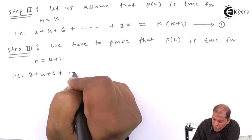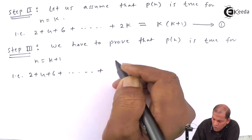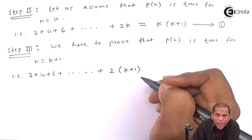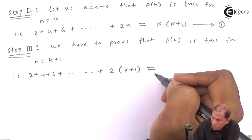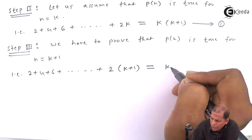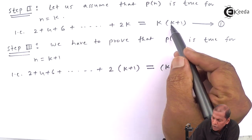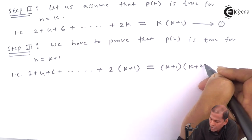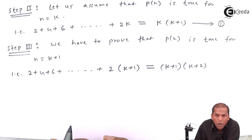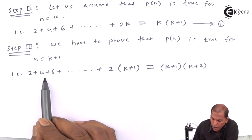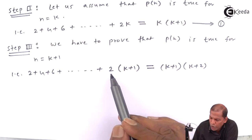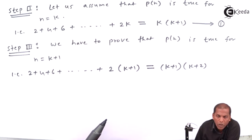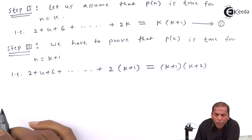Step number 3: we have to prove P(k plus 1). That is, replacing k with k plus 1 on the right hand side gives k plus 1 and k plus 1 plus 1 which equals k plus 2. So we need to prove that 2 plus 4 plus 6 plus dot dot plus 2(k plus 1) is equal to (k plus 1)(k plus 2).